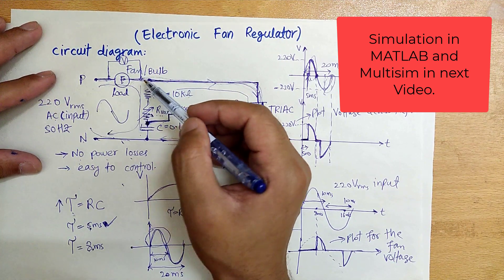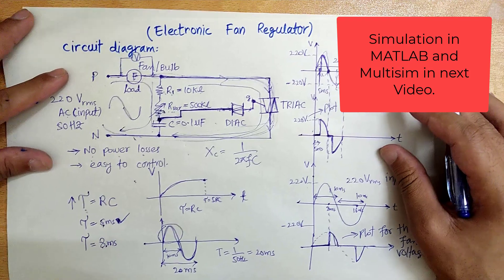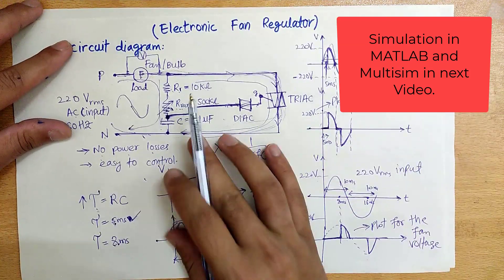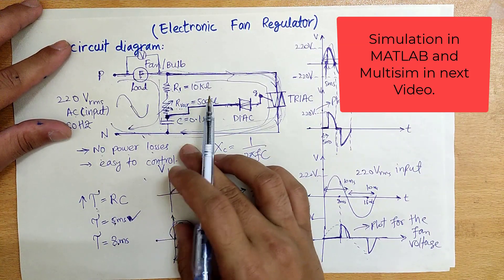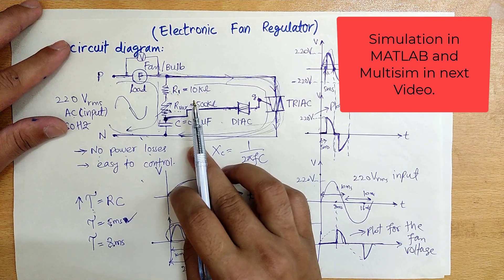The benefit of this circuit is no significant power losses since the load current does not see any resistance, and it is easy to control using just a TRIAC, DIAC, and an RC network to increase fan speed or bulb intensity. Thank you for watching. In the next video, we will do a simulation of this circuit in MATLAB and MultiSim.